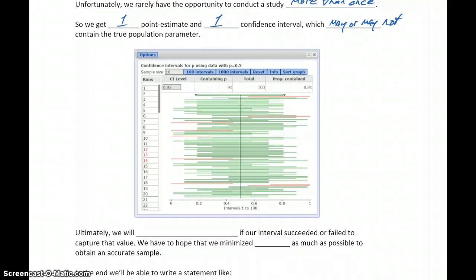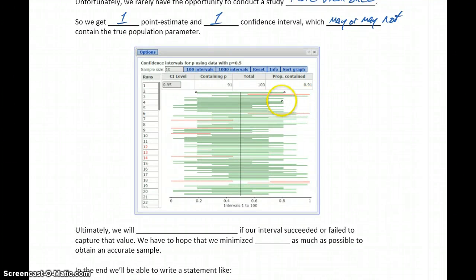When we generated this list, we saw all of these different bars in green. Maybe we get one of those. If we do, then yes, we capture the true population parameter. But if the point estimate and confidence interval we end up generating happen to be one of these red lines, then no, we end up with a confidence interval that doesn't capture that true population parameter.